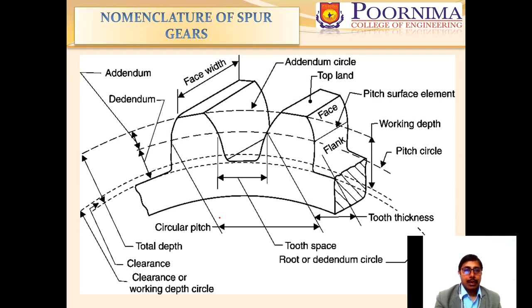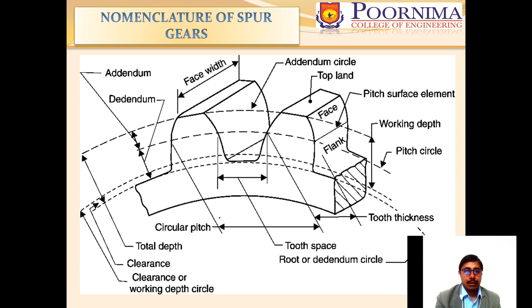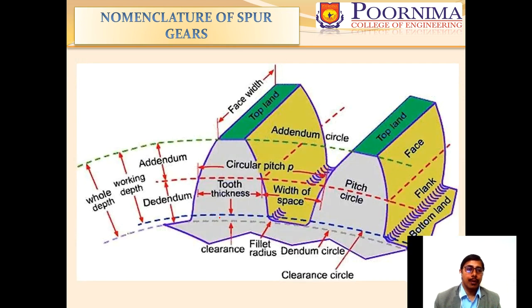Now let us talk about the nomenclature of the spur gear, which is very important to understand. The layout of two gear teeth is shown to discuss the different nomenclature. We have a pitch circle; above the pitch circle, the distance is known as the addendum, and the distance below the pitch circle is known as the dedendum. The working depth and the whole depth are also indicated.